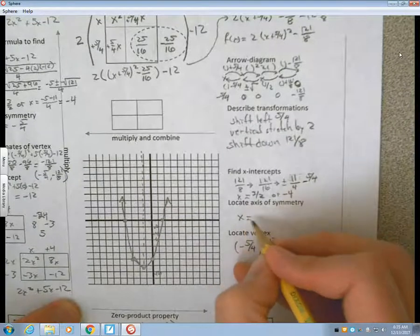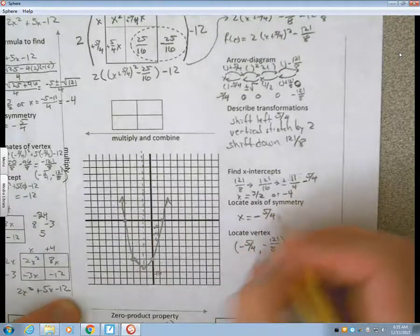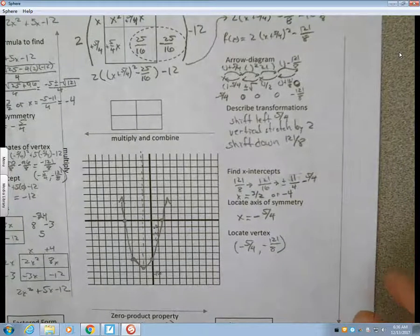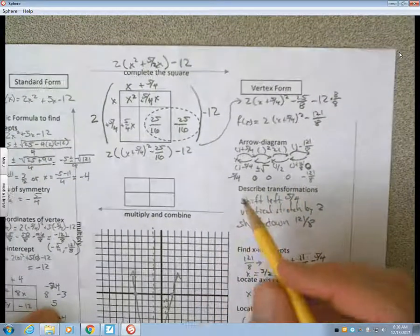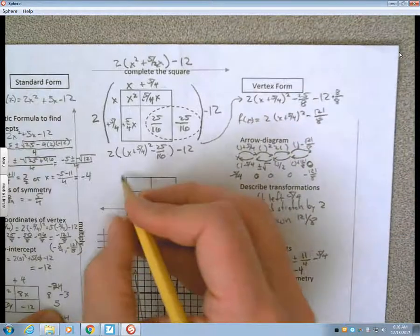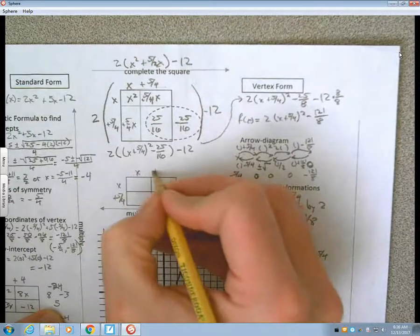All right. If, let's go back up and fill in this part. If I was vertex form and wanted to get back to the standard form, I'm going to take this, which says I need an x plus 5 fourths that I'm going to square. So, times itself, I have a 2, I have two copies of that with a minus 121 eighths.